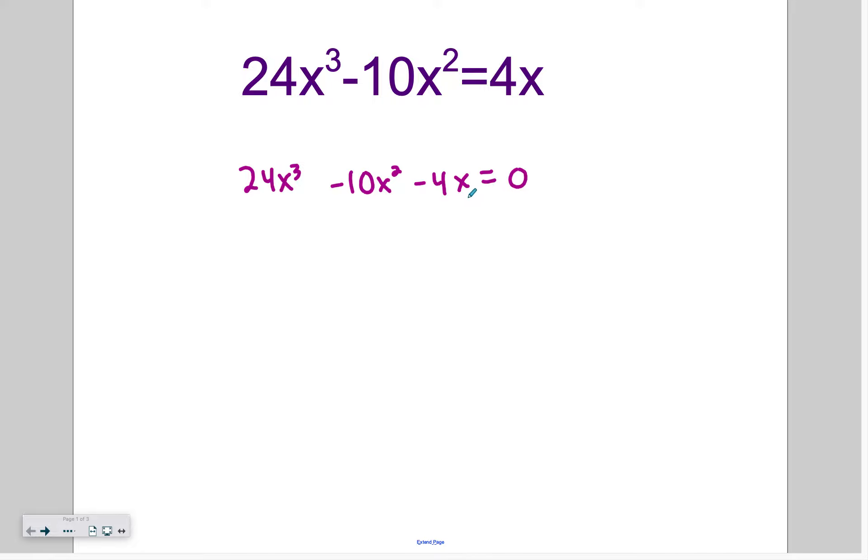There isn't always a GCF other than one. So there isn't always something that we have to pull out. But you do need to check because it makes it much simpler to factor. So is there a GCF amongst all the terms? Yes, there is. They're all divisible by 2. All the numbers are divisible by 2, and they all have an x. So I'm going to go through, and we're going to pull out an x from each term, and we're going to divide each of the numbers by 2.